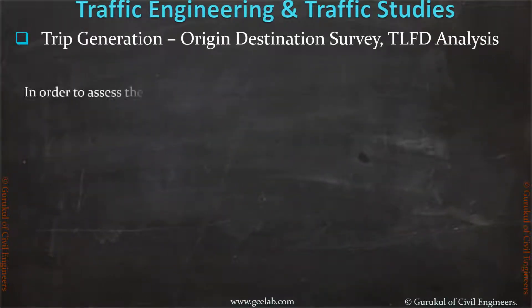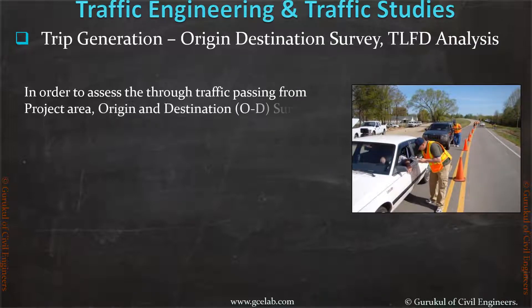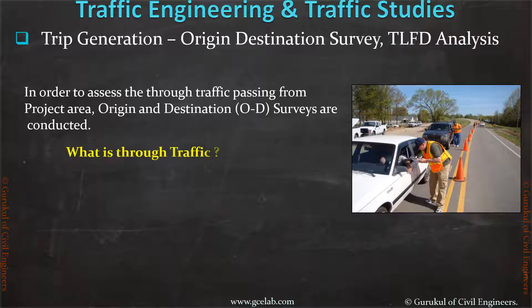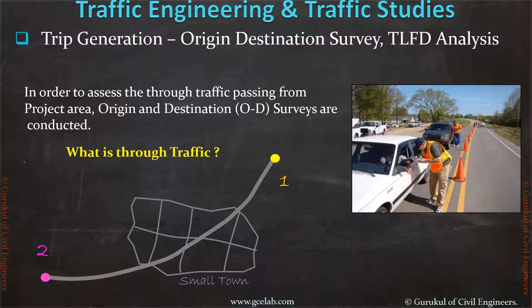Junction turning movement surveys are also required for preliminary design and detailed design stages of the project. In order to assess through traffic passing through a project area, origin and destination surveys are conducted. For example, if a highway passes through a town connecting two points, the traffic running between those two points is through traffic for the town. Our main objective is to identify through traffic, because this traffic will potentially use the new bypass if constructed.